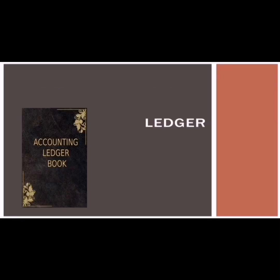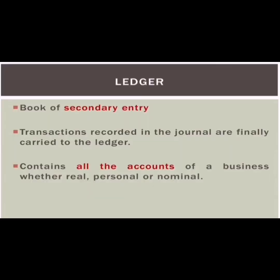After the journal comes the ledger. The ledger is called the book of all accounts, where all accounts are kept. It is also known as the book of all books, or the mother of all books. Transactions recorded in the journal are finally carried to the ledger. It contains all accounts of a business — real accounts, personal accounts, and nominal accounts.